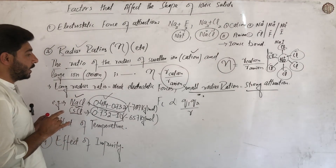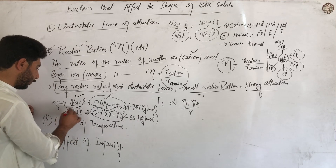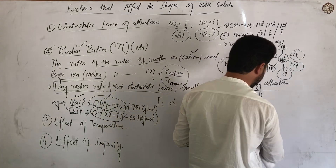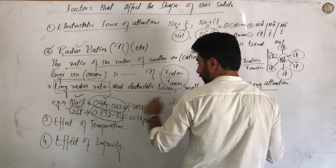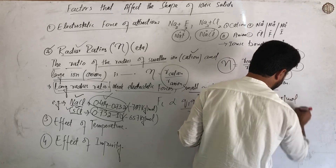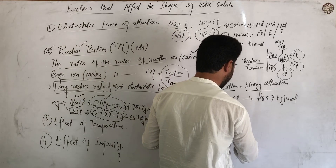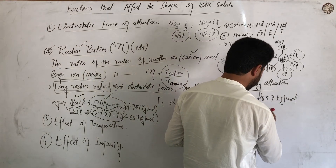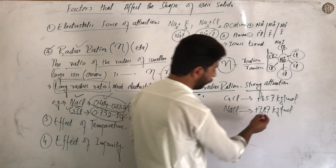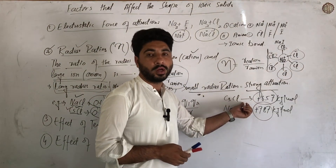A large radius ratio means a weak force of attraction. For cesium chloride (CsCl), the force of attraction is weak. The lattice energy of CsCl is lower - it is about minus 657 kJ per mole. The lattice energy was discussed in the previous lecture. For sodium chloride, the radius ratio is smaller, so the lattice energy is larger.